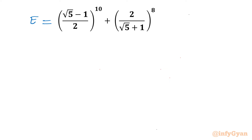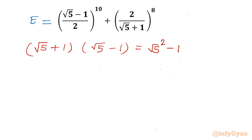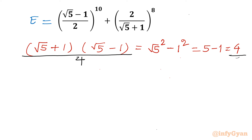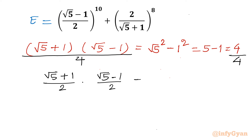I will use one identity and one observation in this question. If we take the product of (√5 + 1) times (√5 - 1), we can write it using the difference of two squares identity: a² - b². So it is 5 - 1, which is 4. Now if I divide both sides by 4, the result becomes (√5 + 1)/2 times (√5 - 1)/2 equals 1.